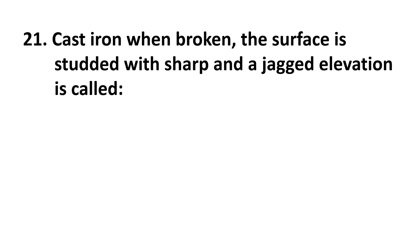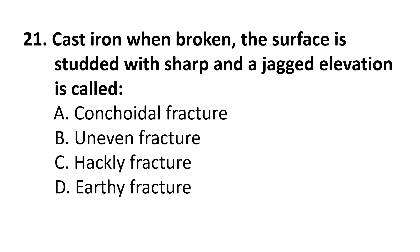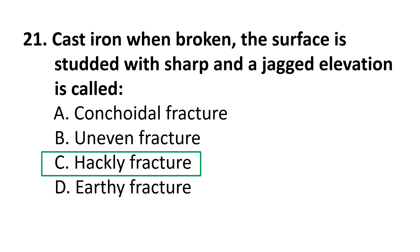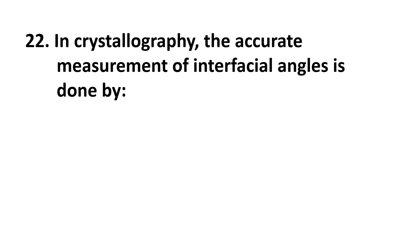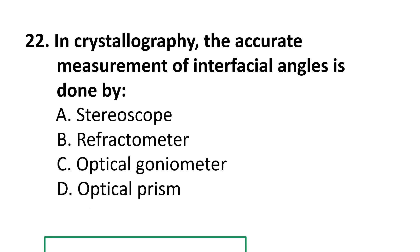Question 21: Cast iron when broken, the surface studded with sharp and jagged elevations is called: The correct answer is C) Hackly fracture. Question 22: In crystallography, the accurate measurement of interfacial angles is done by: A) Stereoscope, B) Refractometer, C) Optical goniometer.